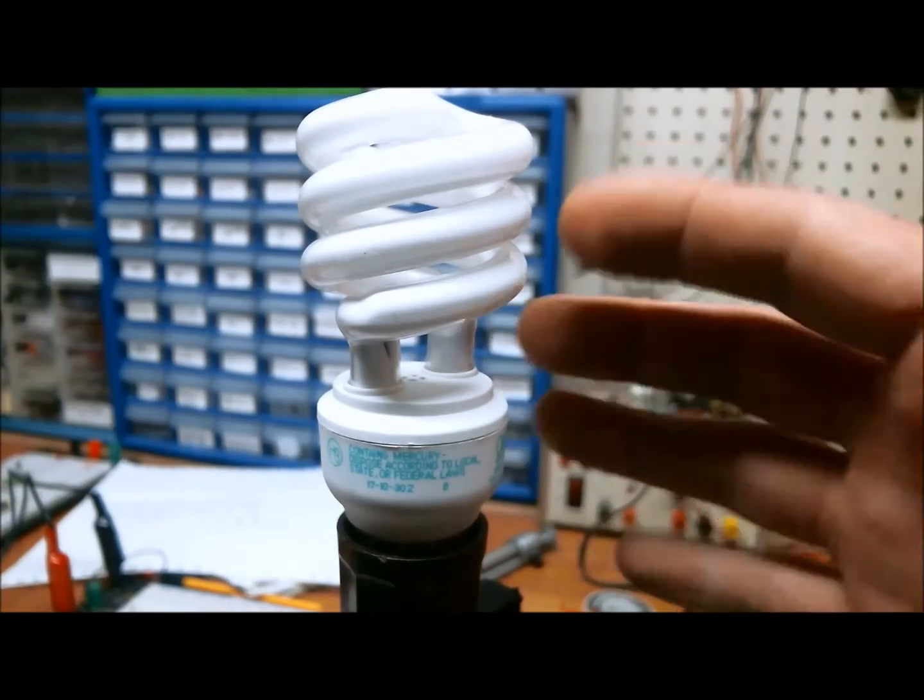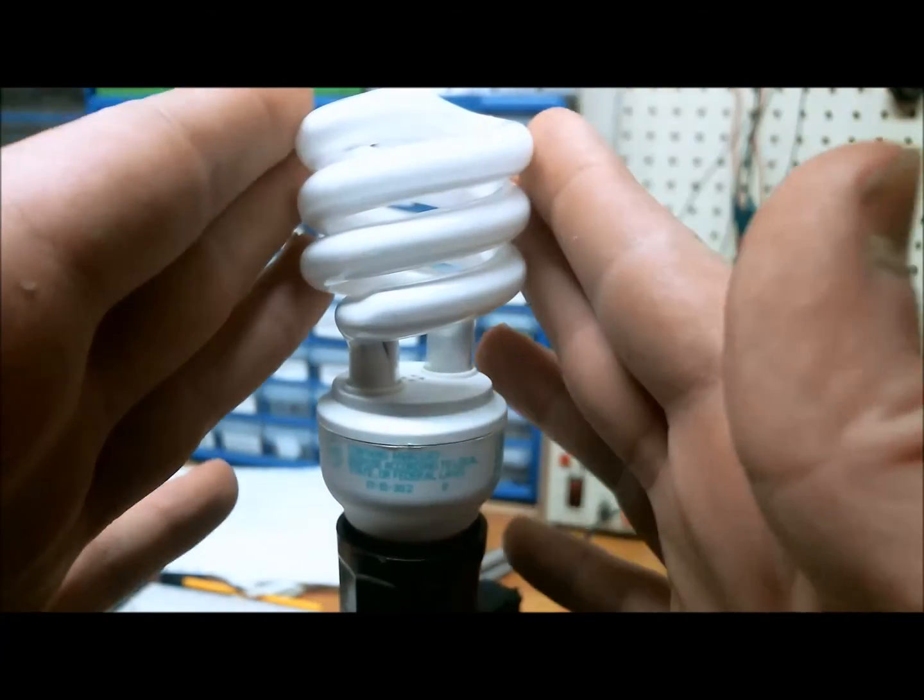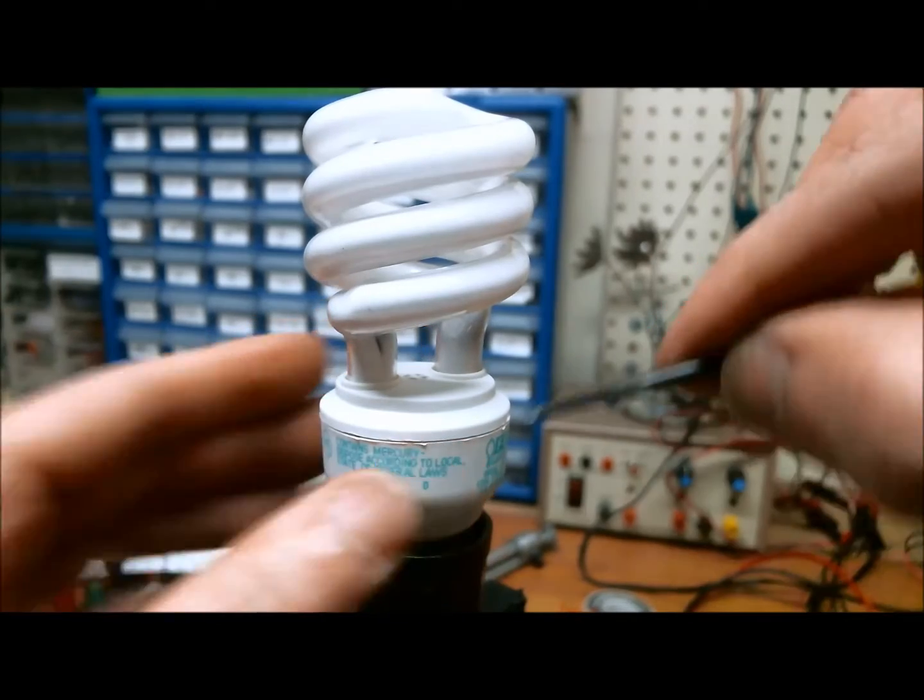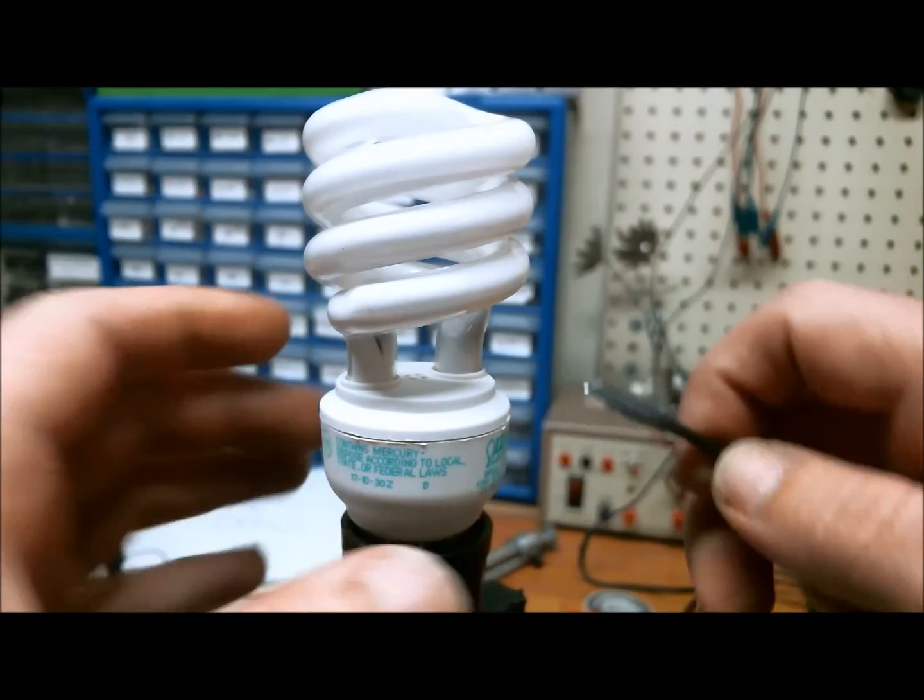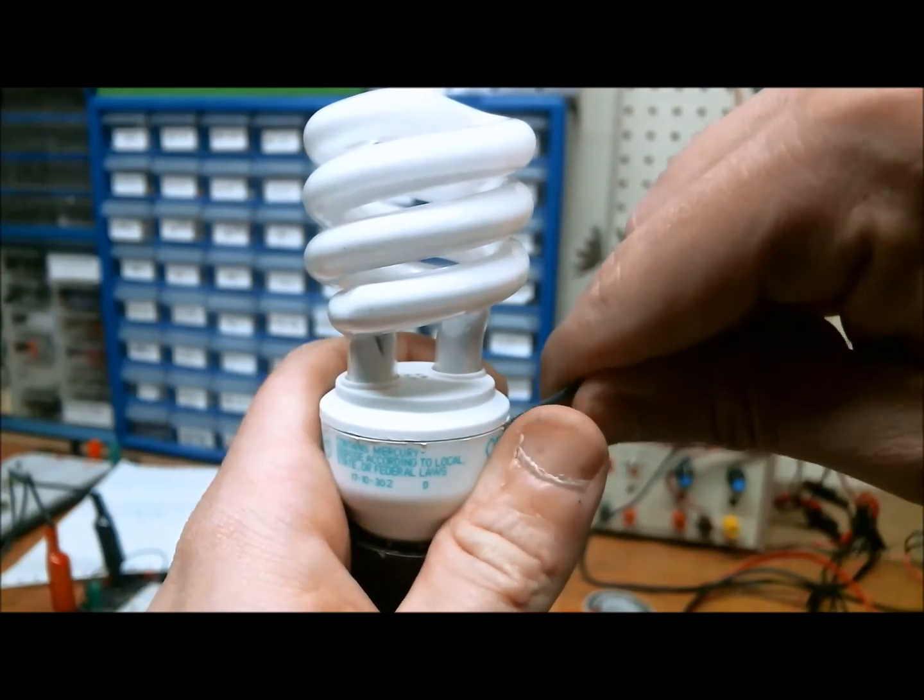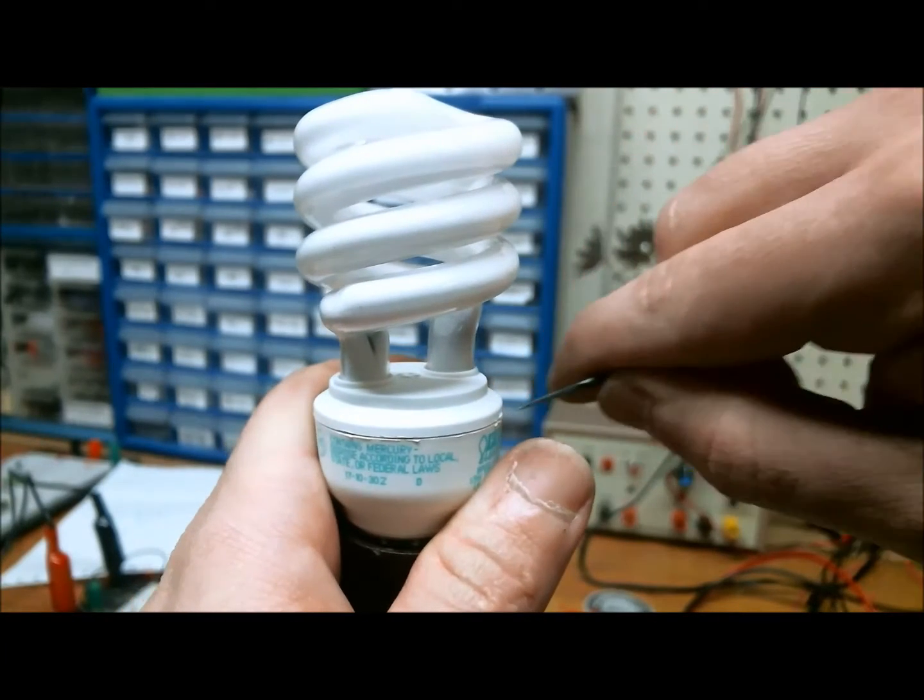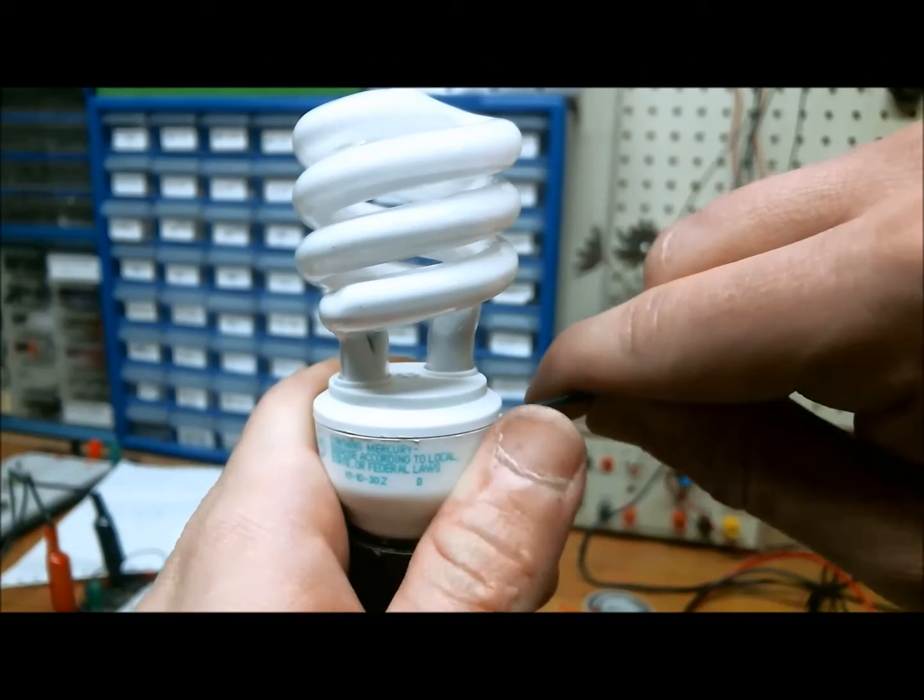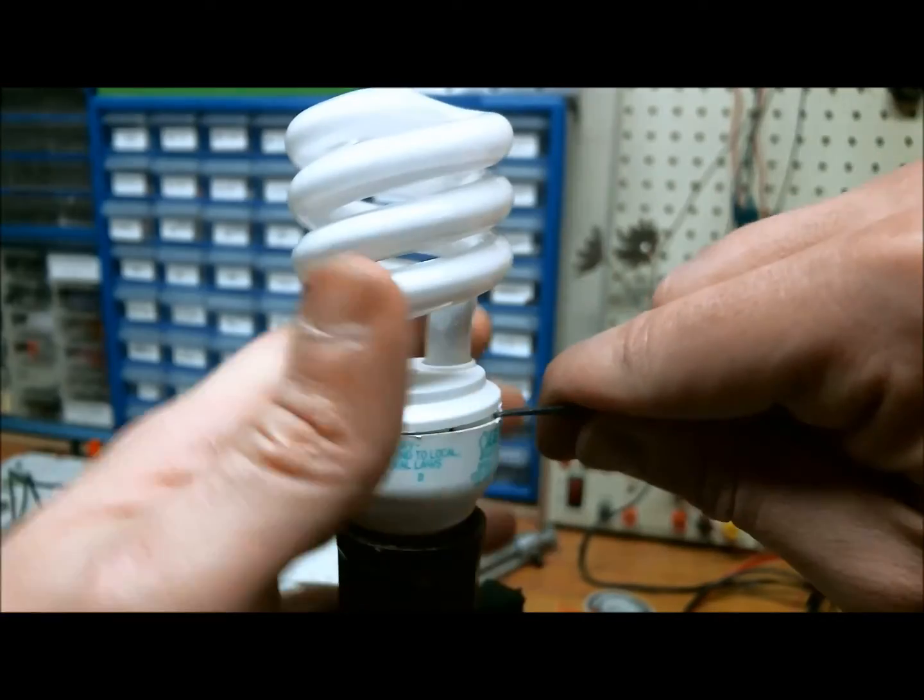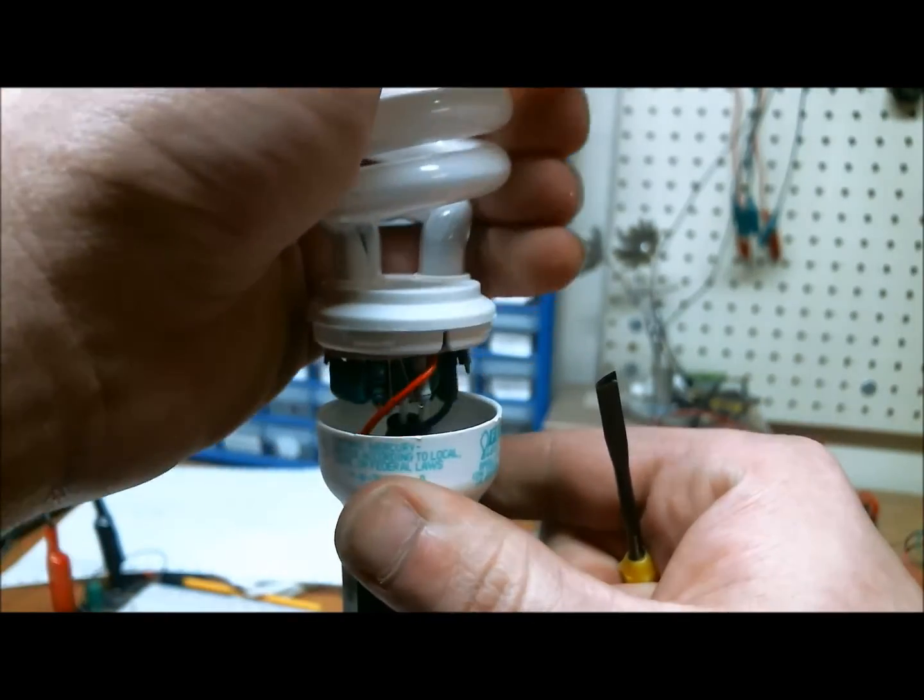All right, now I want to be careful opening this because, as we know, this contains mercury. A good way of opening it, it seems, is just taking a very thin-bladed object and coming in down like this, sticking it under there, and popping the top off like so.